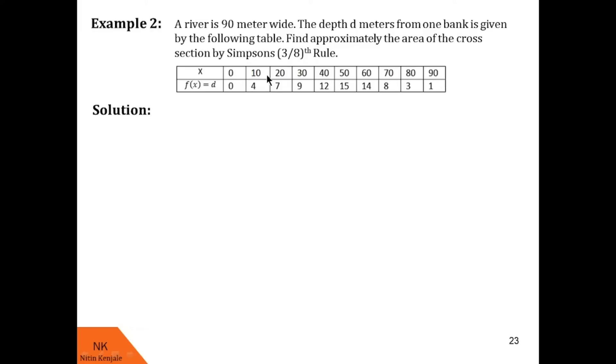the distance in meters from one bank to another bank is given. So x0 is 0, x1 is 10, x2 is 20 and so on. And in second row, depth d in meters of the river is given. So at 0 meters, depth is 0. At 10 meters, depth is 4 meters. At 20 meter distance from the bank, depth is 7 meters and so on.